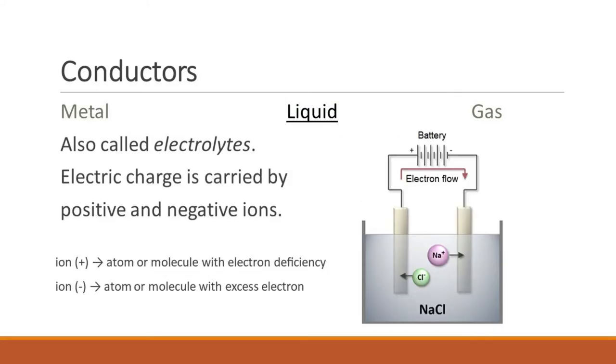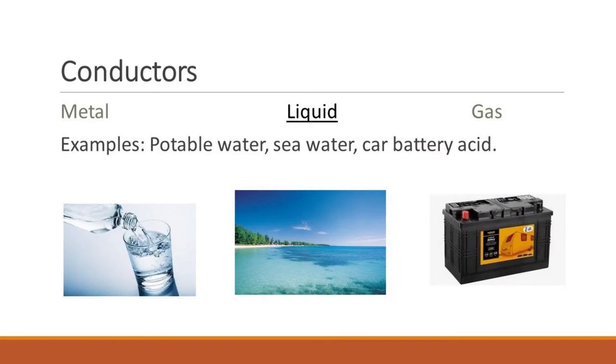Those found as liquid are also called electrolytes. In this case, electric charge is carried by positive and negative ions. A positive ion is an atom or molecule with electron deficiency, and a negative ion is an atom or molecule with excess electron. Examples of conductors found as liquid are potable water, sea water, and carbatory acid.